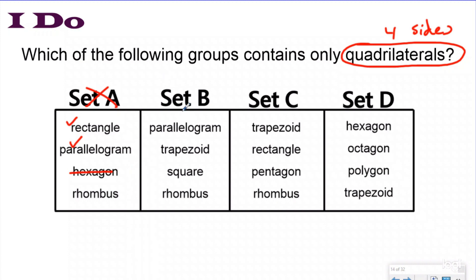Set B: Parallelogram — check. Trapezoid — yes. Square — yes. Rhombus — yes. All four are quadrilaterals. Let me double-check. Set C: Trapezoid — yes. Rectangle — yes. Pentagon — no. Rhombus — yes. Again they gave you three correct answers and one incorrect, so you've got to look at all of the shapes inside the group.